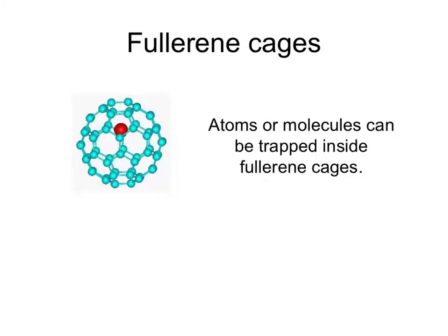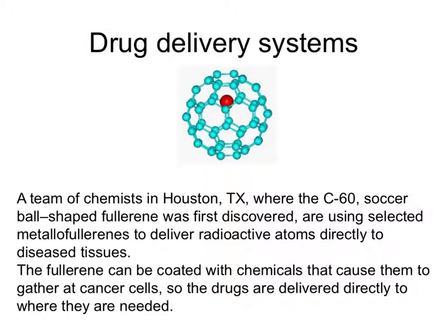Fullerenes are the simple molecular structural forms of graphite which form into a ball. This one here shows that a fullerene can be used as a cage to trap atoms or molecules inside. For this reason, they can be used in drug delivery systems — learn that phrase, drug delivery systems.